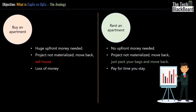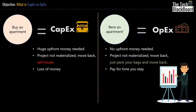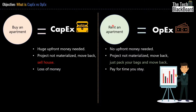You can now see the clear benefits of renting an apartment. Let's bring in our main terms — CapEx and OpEx — and relate them to this analogy. CapEx, or Capital Expenditure, is similar to buying an apartment, while OpEx, or Operational Expenditure, is similar to renting an apartment. Simply put, CapEx is buying something and OpEx is renting something.